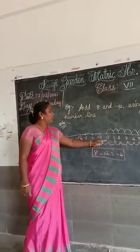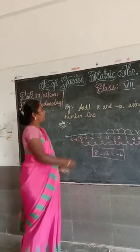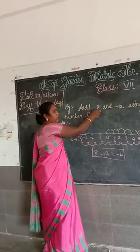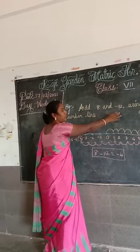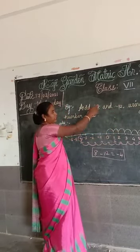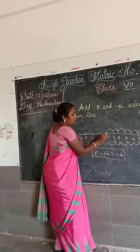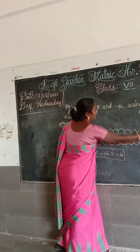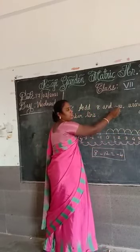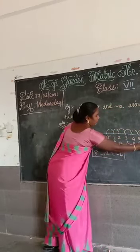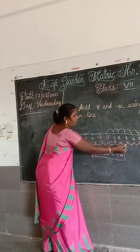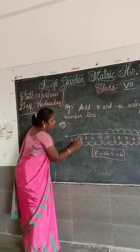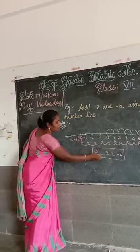Let me repeat: first you have to draw the number line using a scale. You have to check what numbers are given — here 8 and minus 12. Positive integer means move to the right-hand side; negative integer means move to the left-hand side. Start at zero, move 8 steps right: 1, 2, 3, 4, 5, 6, 7, 8. Then, since minus 12 is negative, move 12 steps left: 1, 2, 3, 4, 5, 6, 7, 8, 9, 10, 11, 12. The answer is minus 4. So 8 plus minus 12 equals minus 4.